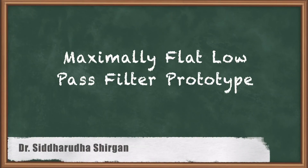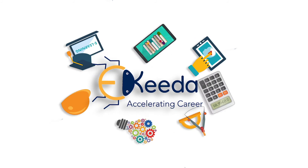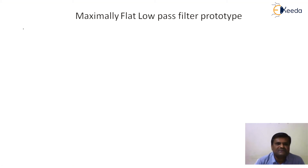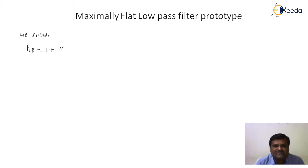Hello friends, in this video lecture we are going to discuss the maximally flat low-pass filter prototype of insertion loss technique. In the previous lecture, we derived the equation for power loss ratio, which is also characterized by the insertion loss method. Power loss ratio is given as PLR = 1 + M(ω²) / N(ω²), where M and N are polynomial equations.